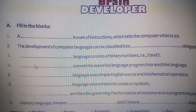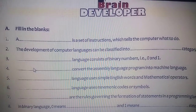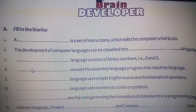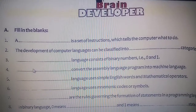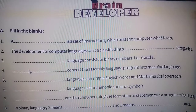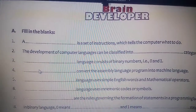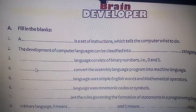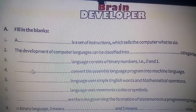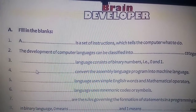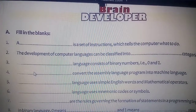Third: dash language consists of binary numbers 0 and 1. Machine language is the low level language that only understands 0 and 1. So the answer of the third filling the blank is machine language consists of binary numbers 0 and 1.